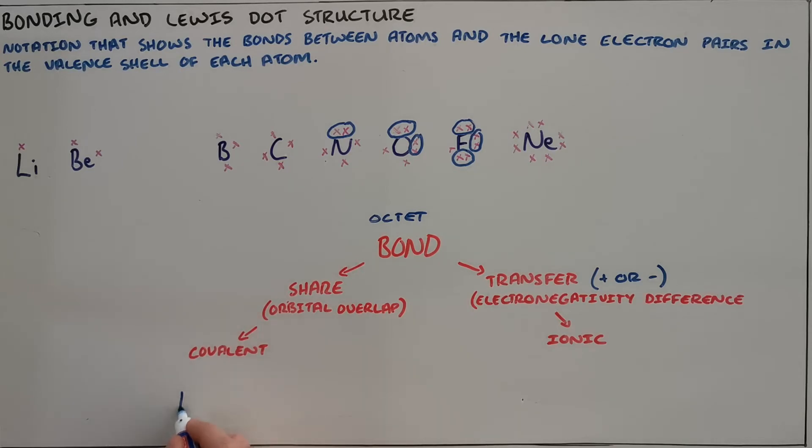A simple example of a covalent bond is as we can see here, we have a fluorine atom that has seven valence electrons. If that fluorine atom overlaps its orbital with a nearby fluorine atom, what we find here is that those two fluorine atoms are then sharing an electron pair, and each fluorine atom can then say it has a full valence shell because there are eight electrons surrounding that atom. And so we have formed a covalent bond here through orbital overlap which shares electrons.